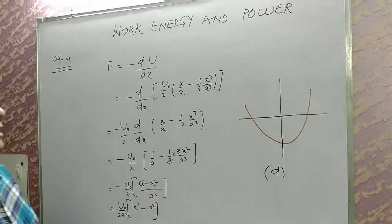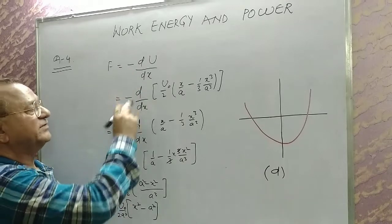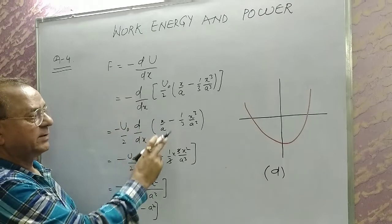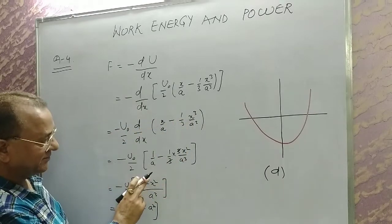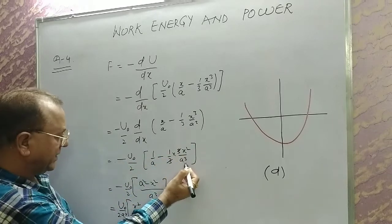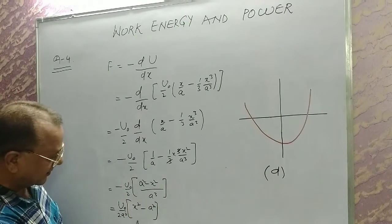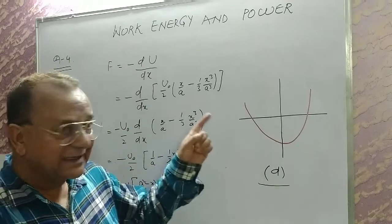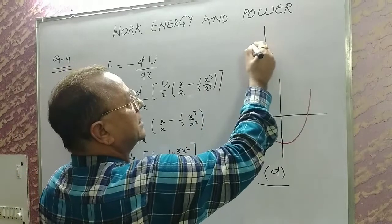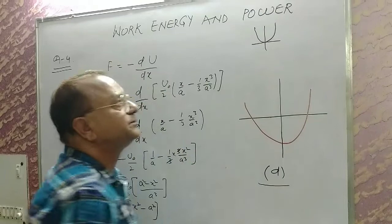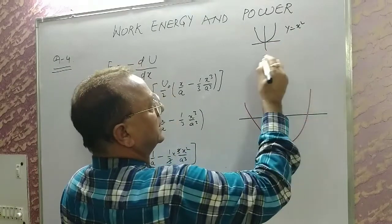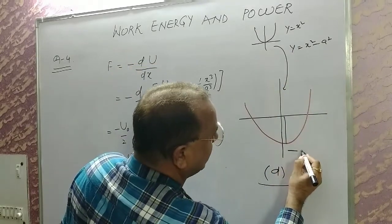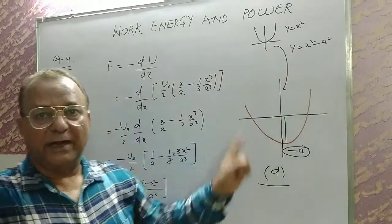Question number four: F = −dU/dx. The expression for U is given as U = (U₀/2)[x/a − (1/3)(x³/a³)]. After differentiation: dU/dx = (U₀/2)[1/a − x²/a³] = (U₀/2a)(a² − x²)/a². Taking the negative, F = (U₀/2a)(x² − a²). Answer is D. For students unfamiliar with the graph: y = x² shifted down by a² gives the graph of y = x² − a².